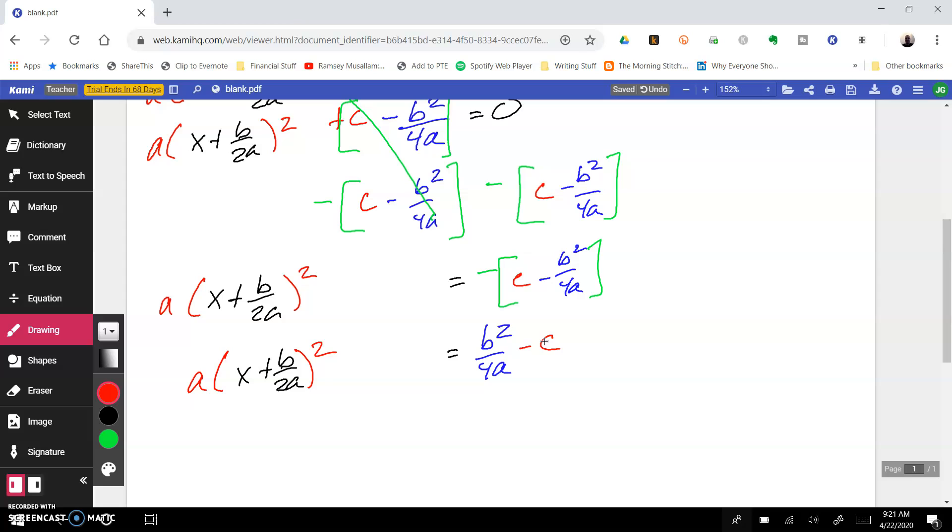And over on the other side we still have a times x plus b over 2a quantity squared. It would be really nice if this was all one fraction. And we could make this as one fraction over one denominator. Let's go ahead and do that. Our common denominator in this case would be 4a. So we're going to need to multiply the c by 4a over 4a to get a common denominator. And when we do, that gives us b squared minus 4ac all over our common denominator of 4a. That's what happens when we multiply that through.